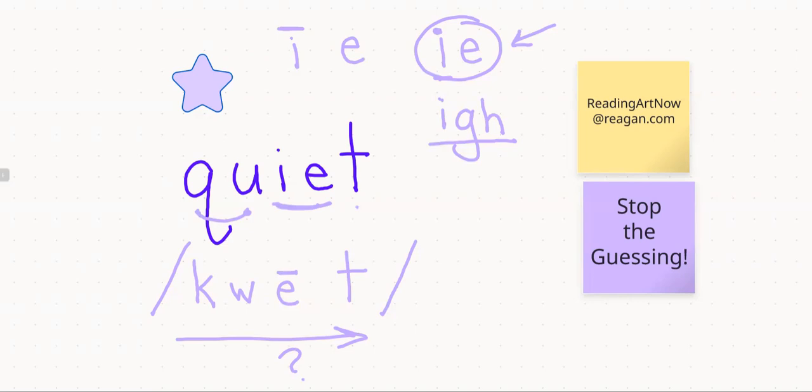Alright. So, we need, it doesn't. So, we need to try the other option. We're going to try I making a separate sound from E. Alright. And if that's the case, that means it's two syllables. And then, this is our first syllable. And this is our second syllable.